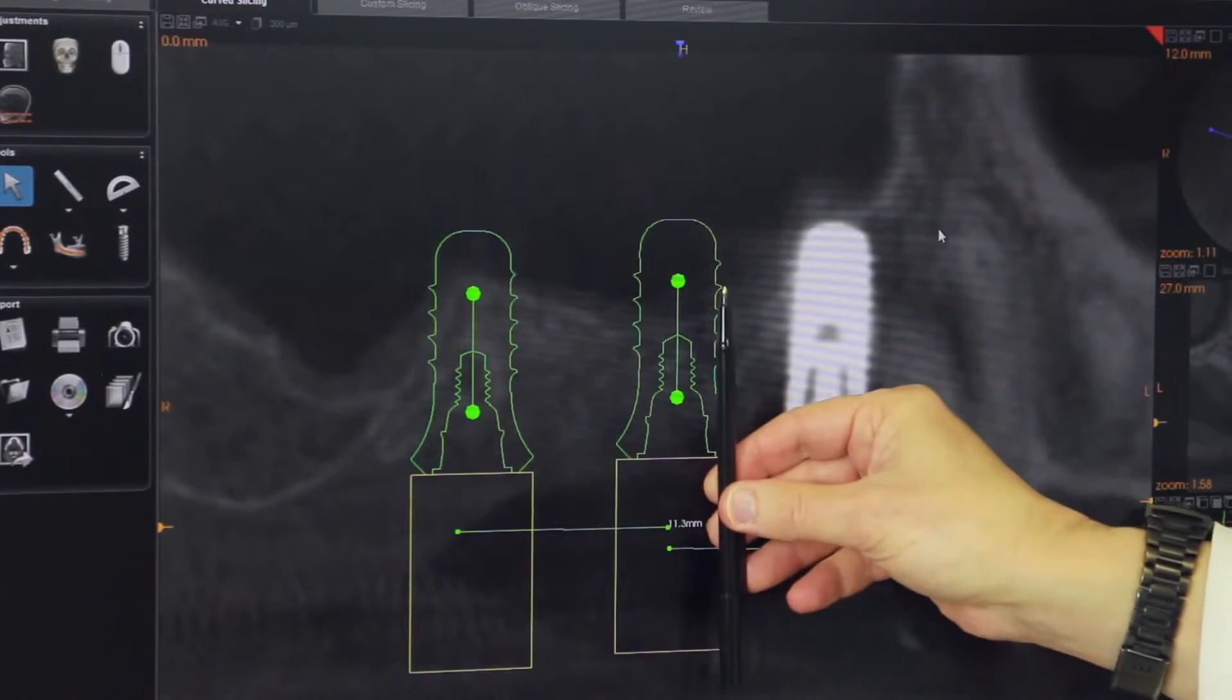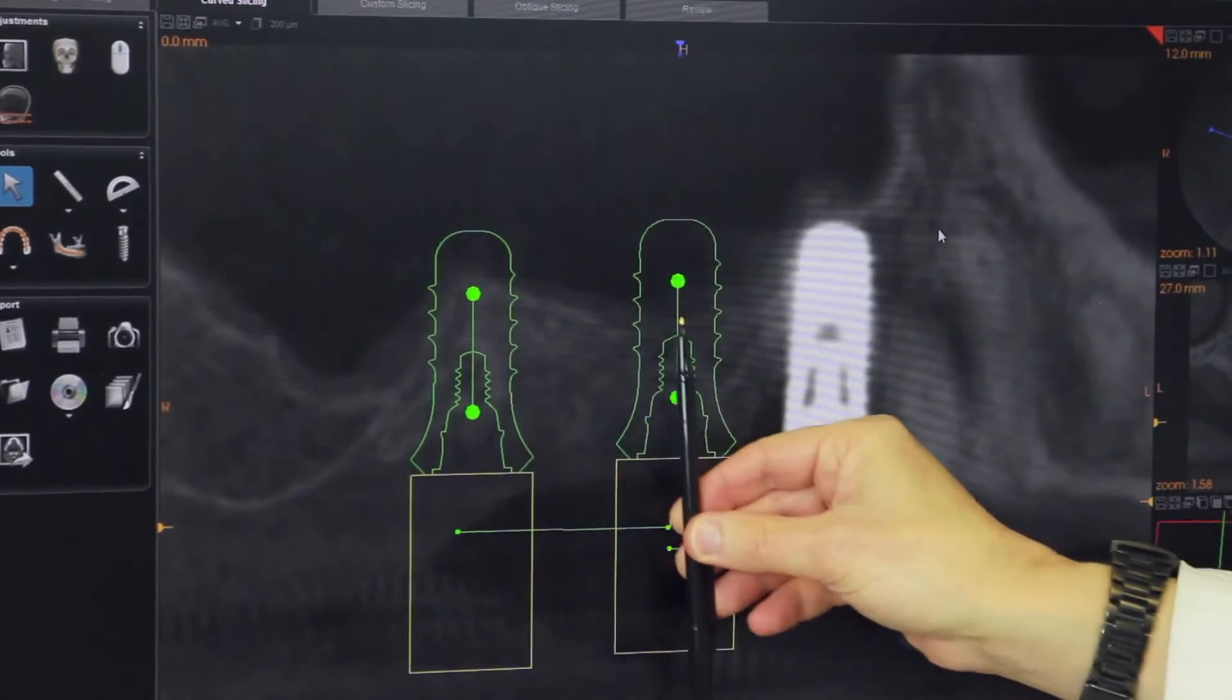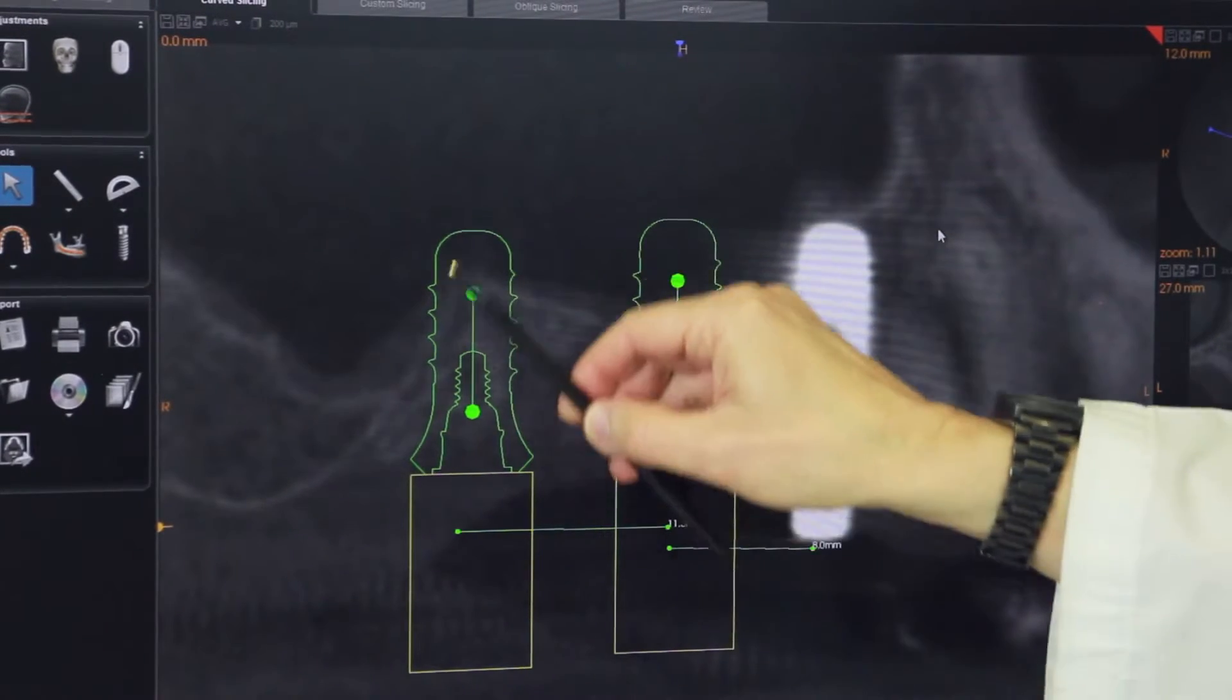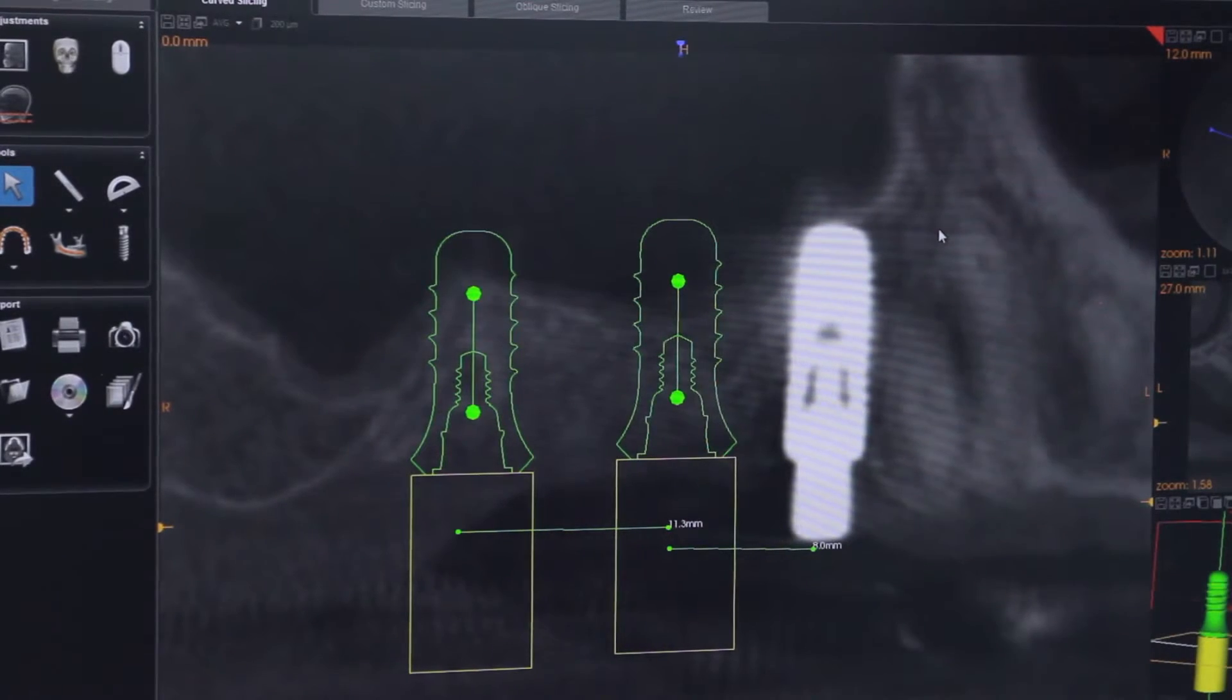As we can see here, if we put our implants in virtually, we can see that they would protrude into the sinus. We wouldn't know this without a three-dimensional scan.